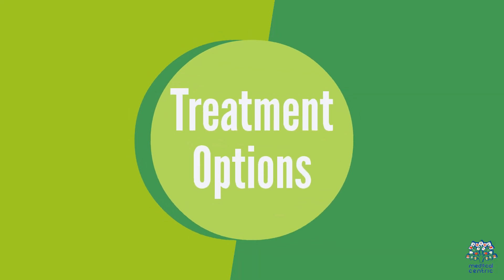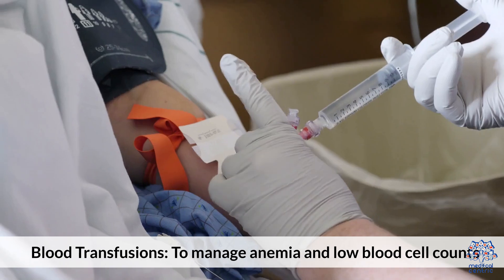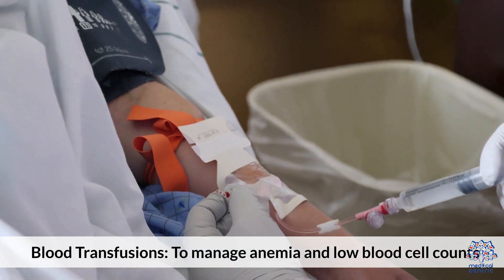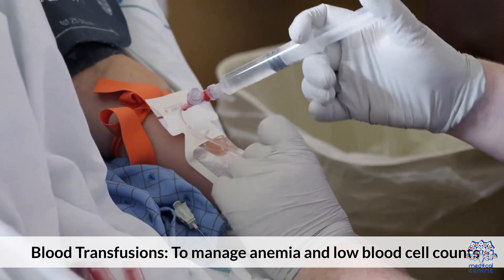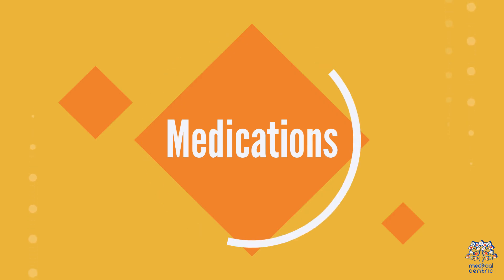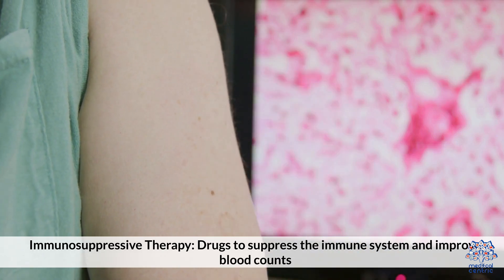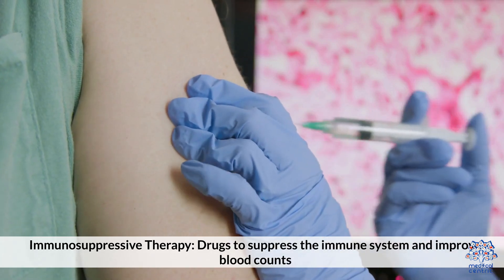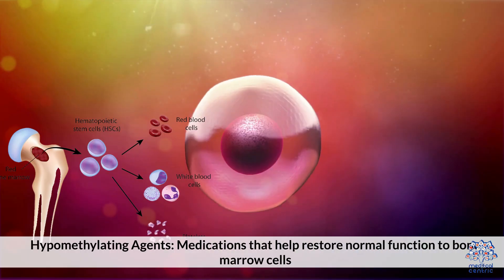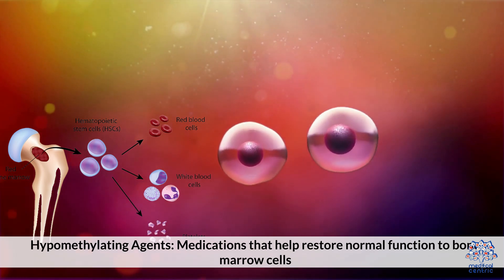Treatment options. Supportive care includes: 1. Blood transfusions — to manage anemia and low blood cell counts. 2. Growth factors — medications to stimulate bone marrow to produce more blood cells. Medications include: 3. Immunosuppressive therapy — drugs to suppress the immune system and improve blood counts. 4. Hypomethylating agents — medications that help restore normal function to bone marrow cells.